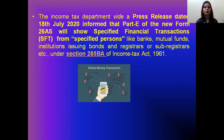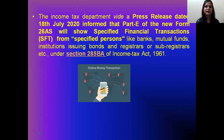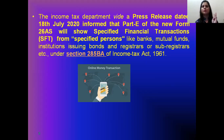This is under Section 285BA of the Income Tax Act 1961. Basically, what has been given in the press release for Form 26AS is that specified financial transactions from specified persons — all these details will come under Part E.